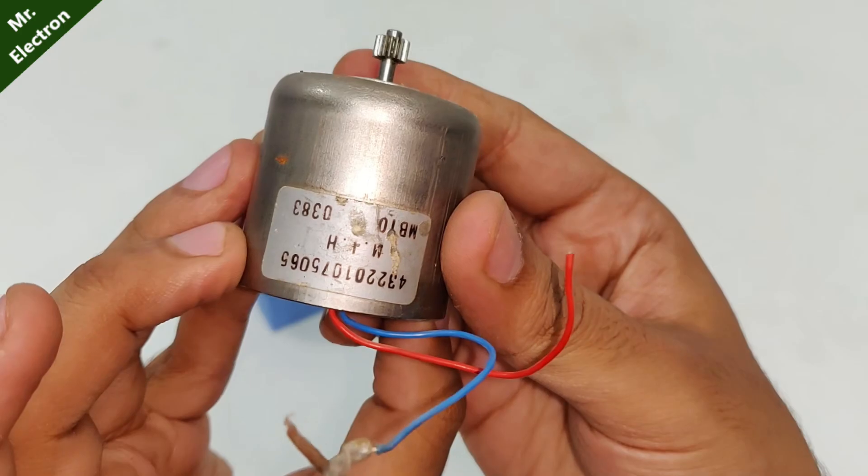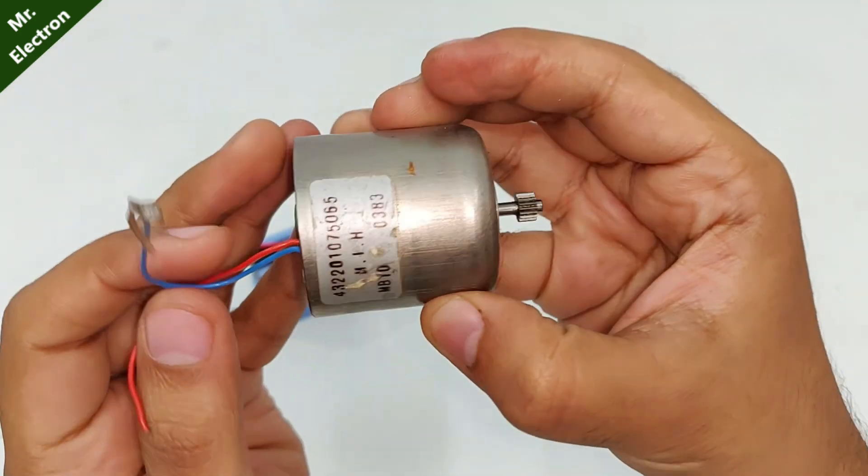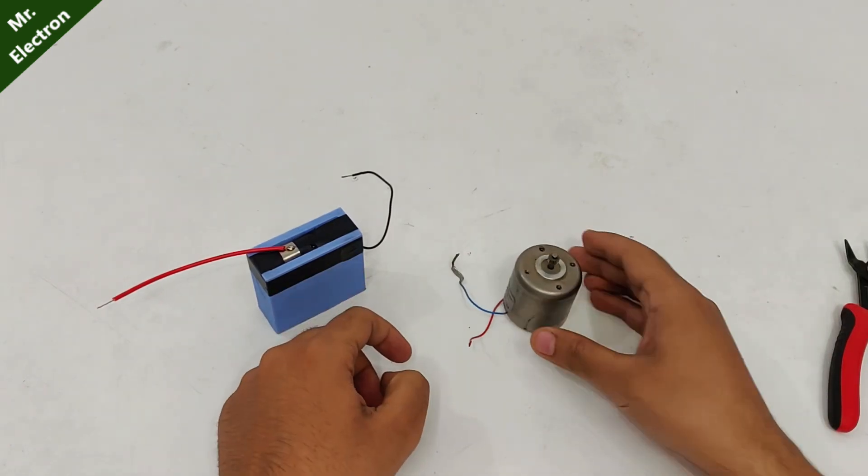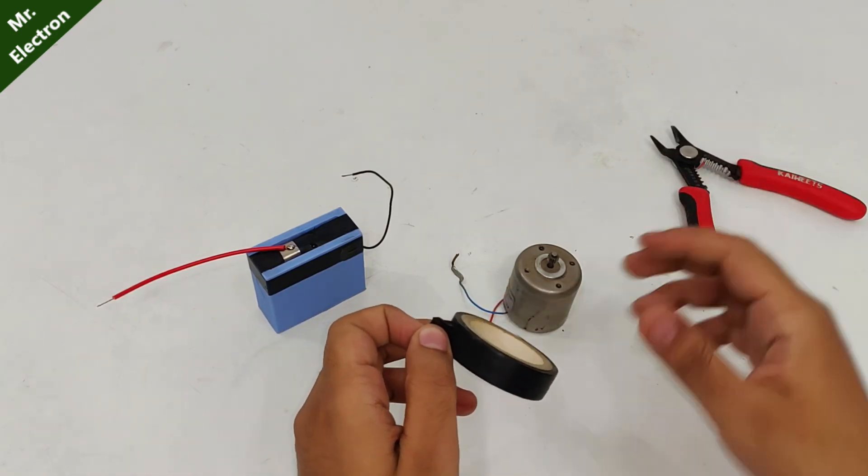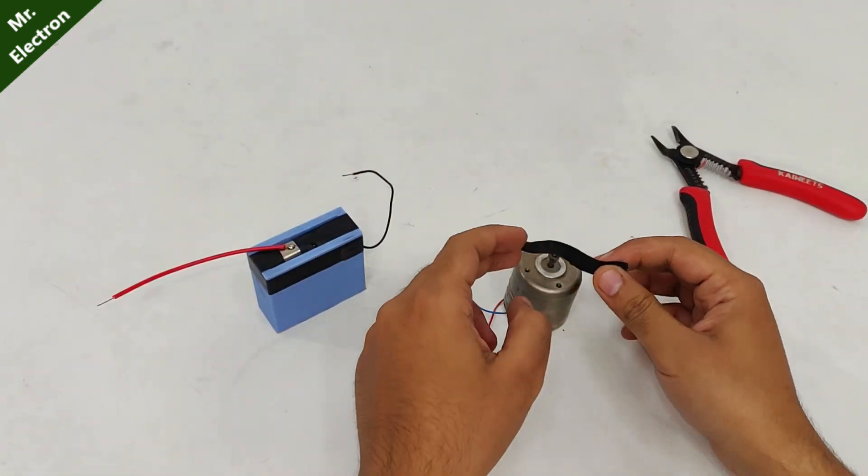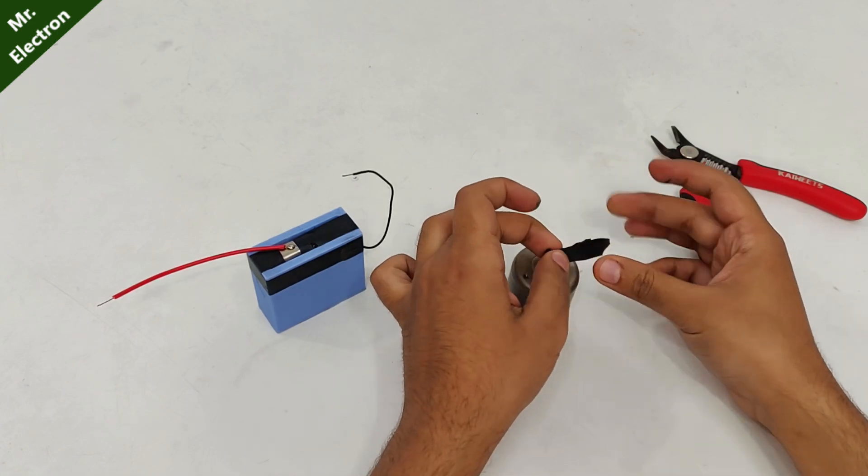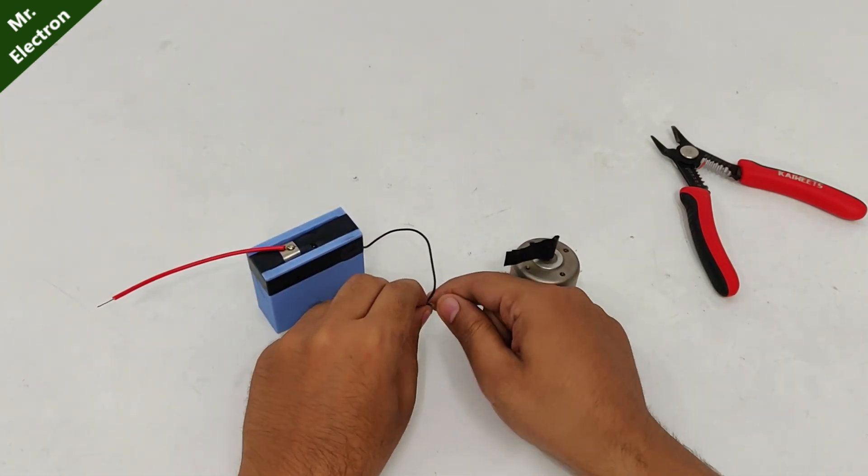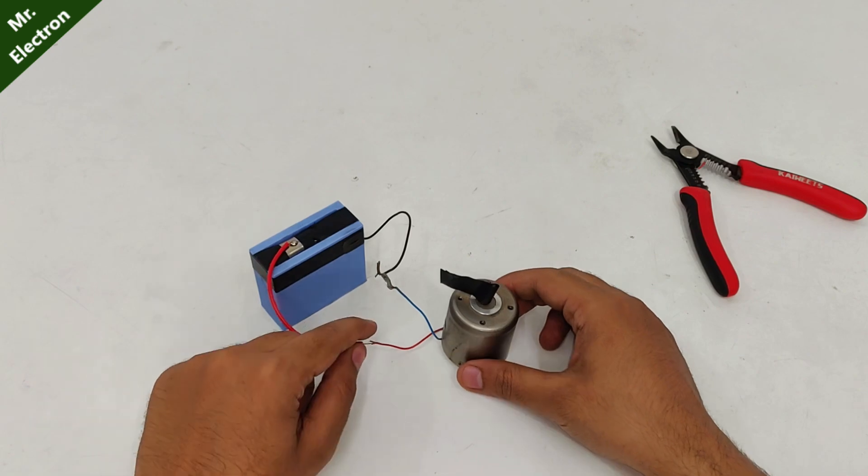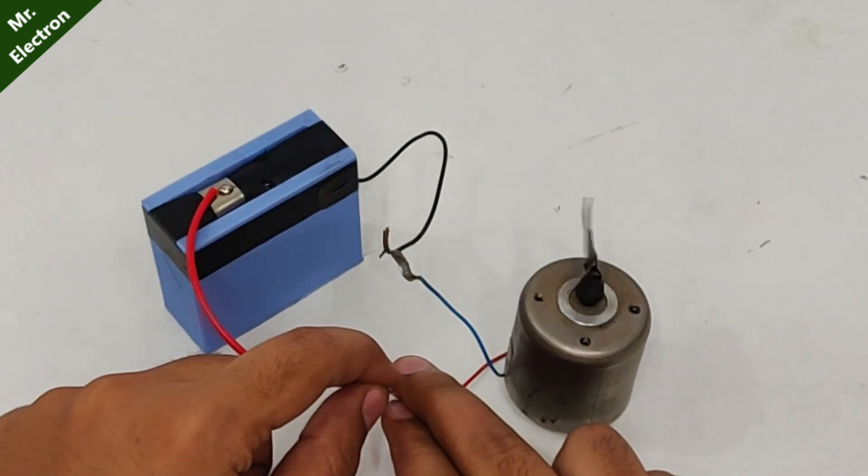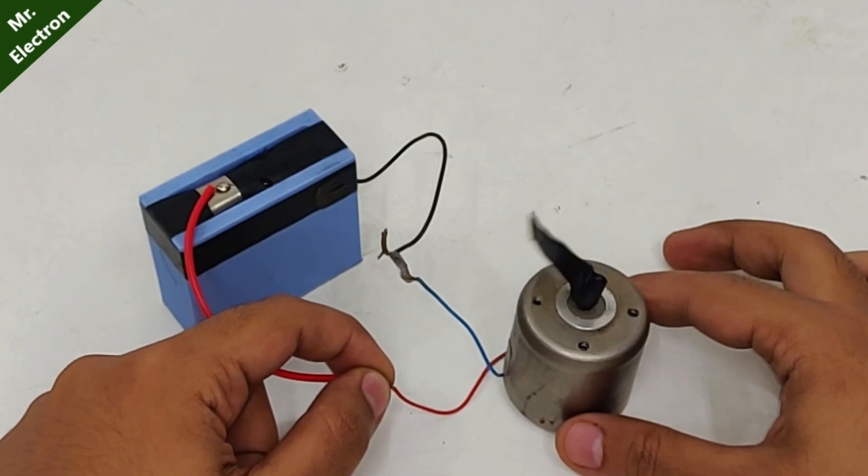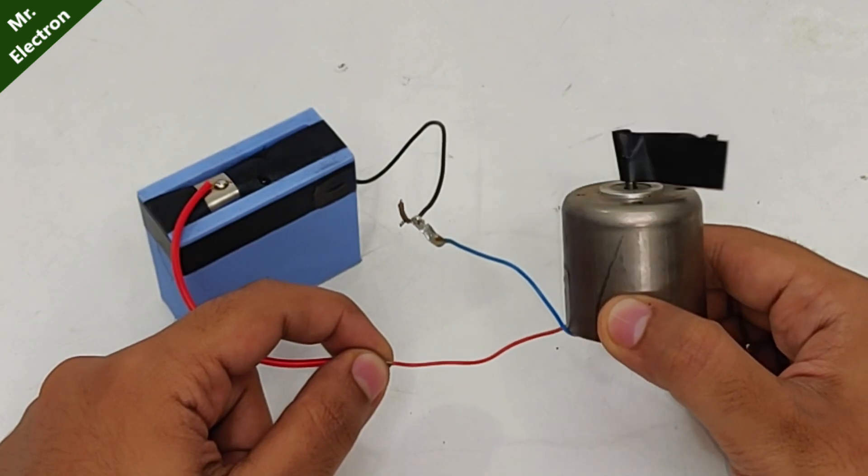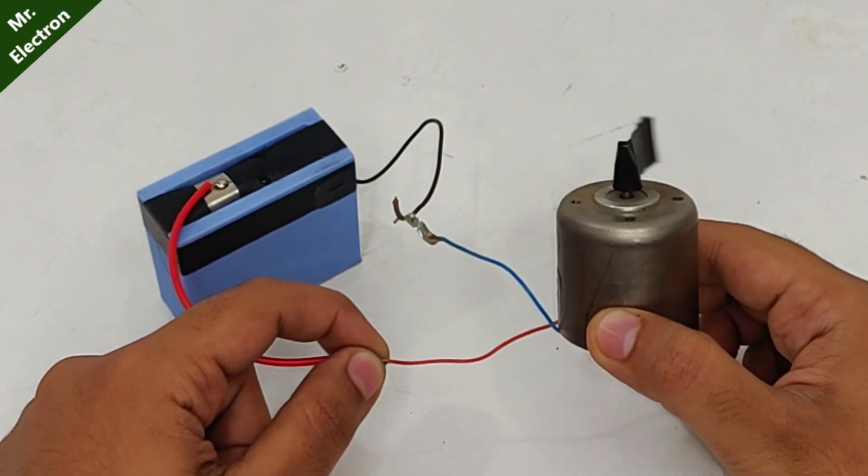Let's see if it starts although the voltage is very low for a single cell. Okay, and here we have it. Our aluminum air cell is running quite good.